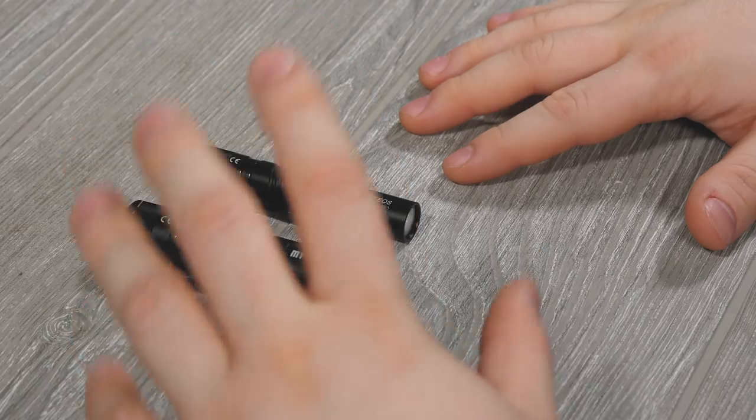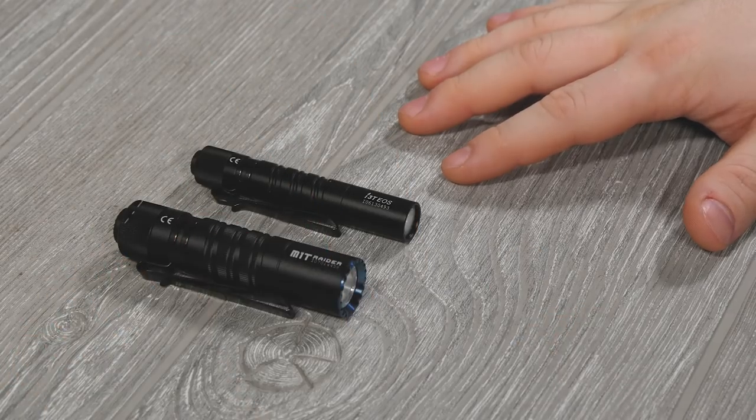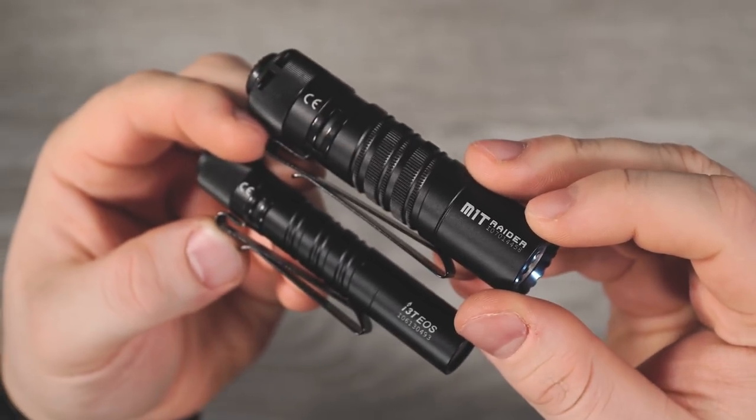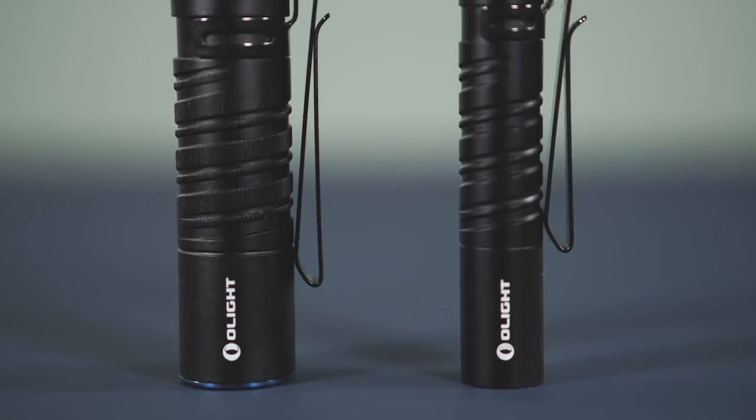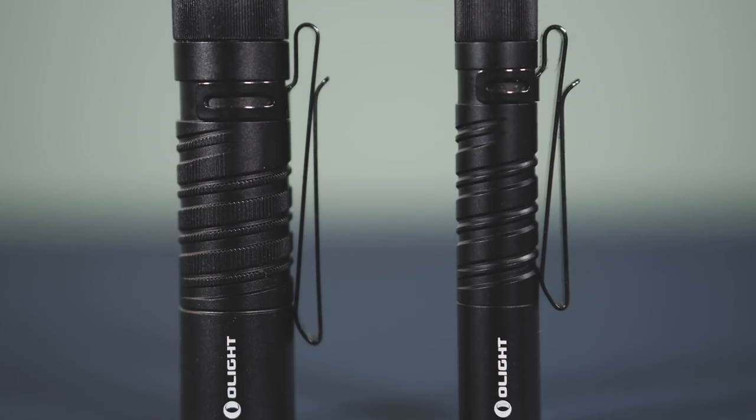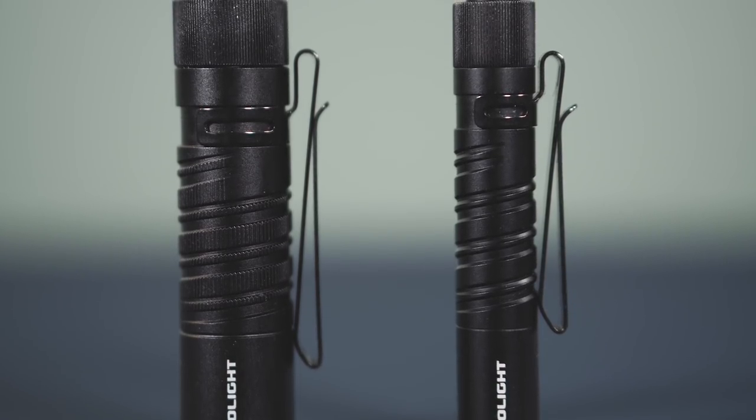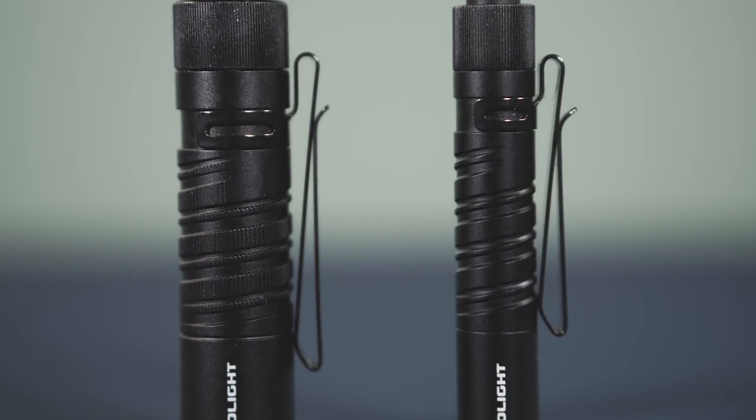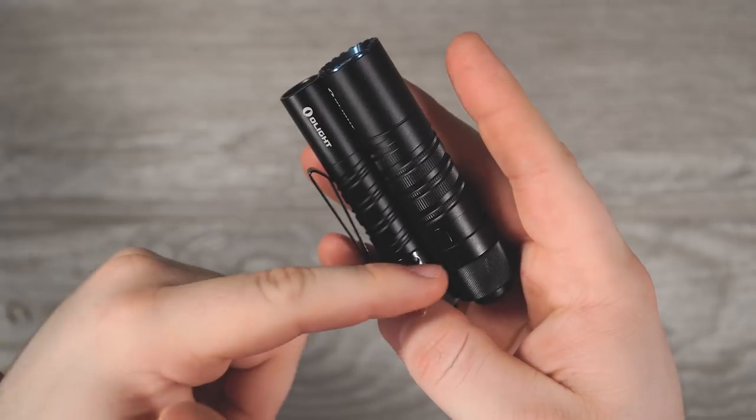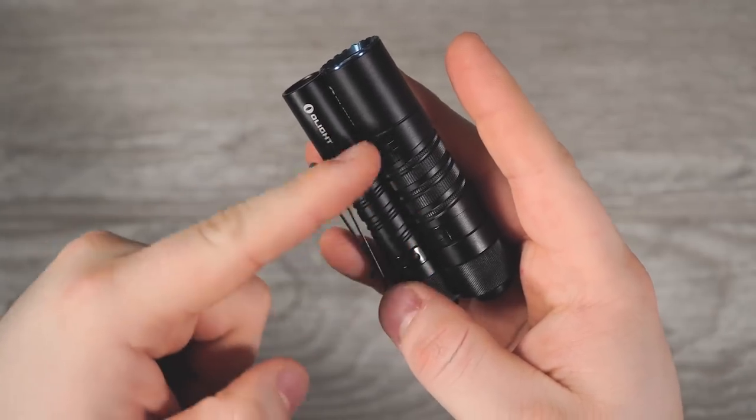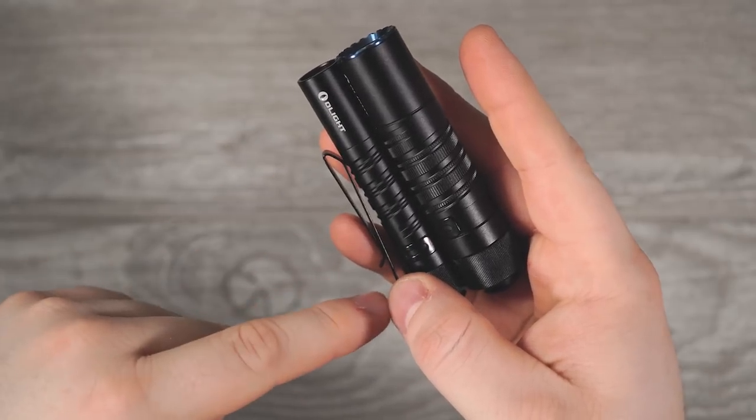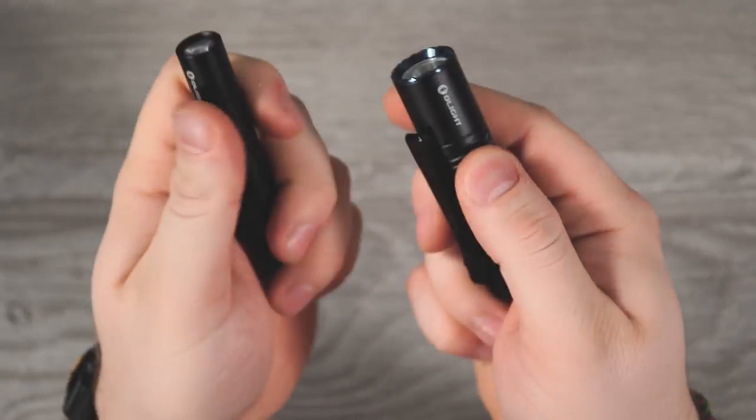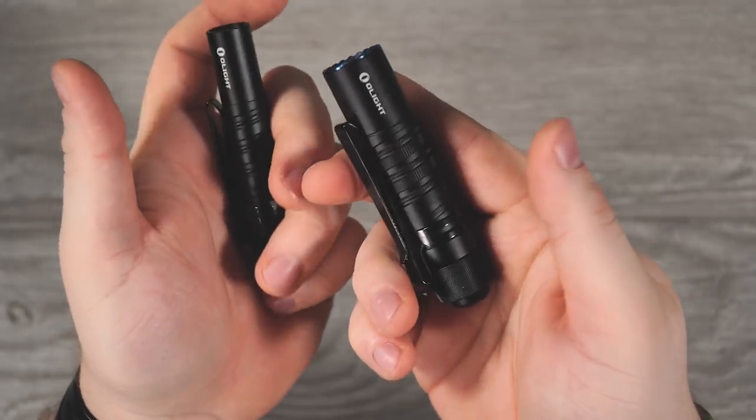One of the first things you're going to notice about these flashlights is they both have the new double helix knurling for grip on their bodies, which is really quite nice. I love how it feels in the hand and it does actually give you a pretty good grip. One difference there is the M1T has vertical lines or stippling throughout the double helix and the i3T does not. This one's smooth, this one is much more grippy.